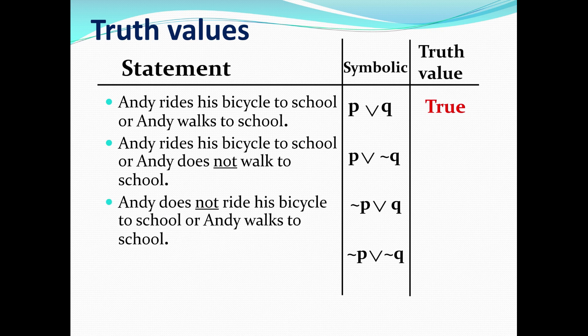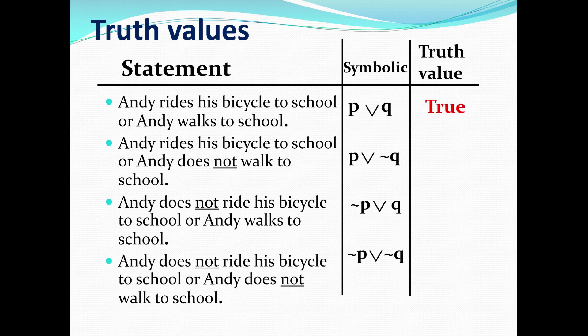The third statement says: Andy does not ride his bicycle to school or Andy walks to school. Similar to the second statement, that statement is also true. What about the last one? Andy does not ride his bicycle to school or Andy does not walk to school. If both of them are not true, then the entire statement is false. So the summary is: true, true, true, and false.